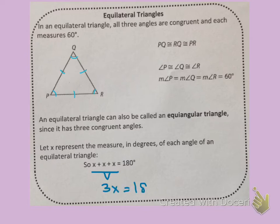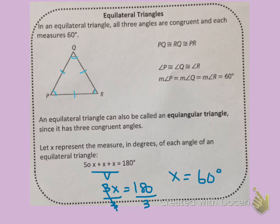So we're saying 3X equals 180 degrees. And if we were to solve this equation by dividing by 3 on both sides, we would see that X equals 60 degrees. So this is why all of the angles in an equilateral triangle are congruent.